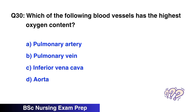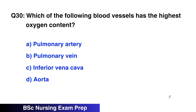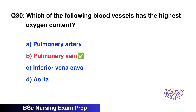Question number 30: Which of the following blood vessels has the highest oxygen content? The right option is B, pulmonary vein.